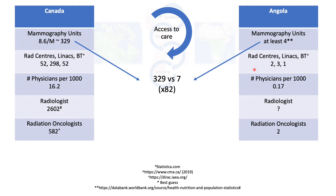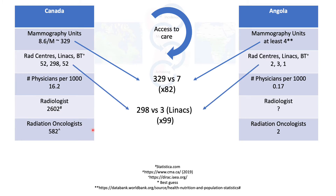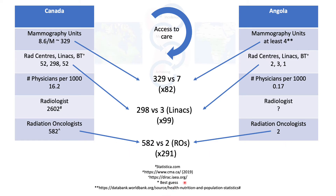All of Angola's radiation facilities are located within the capital city. Regarding physicians and specialists: Canada has 582 radiation oncologists versus 2 in Angola per the Dirac database, and about 2,600 radiologists in Canada, while the number for Angola was unknown and could not be found in available databases.